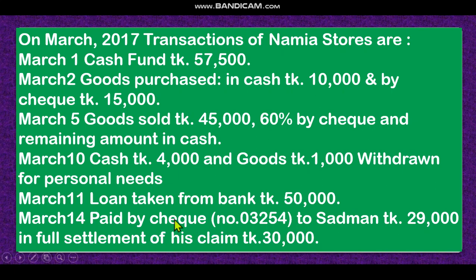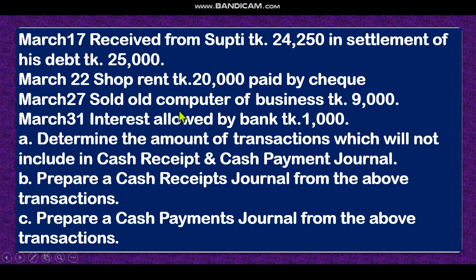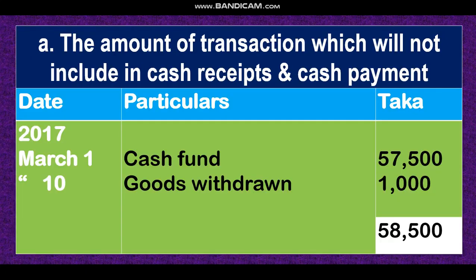Loan taken from bank paid by check, received from Shupti, shop rent paid, sold old computer, interest allowed — all are related to cash, either cash receipt or cash payment. The answer: transactions not included in cash receipt and cash payment journal are cash fund 57,500 and goods withdrawn 1,000 — total amount 58,500.